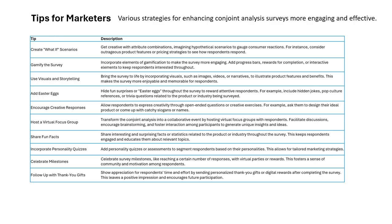There are various strategies for enhancing conjoint analysis surveys to make them more engaging and effective. One tip is to create what-if scenarios. In conjoint analysis, getting the right data is important — surveys can have 27 to 30 combinations, which is tiring for respondents. To address this, get creative with attribute combinations and imagine hypothetical scenarios to gauge consumer reactions.